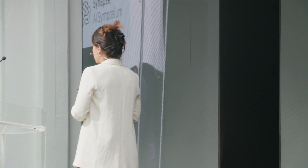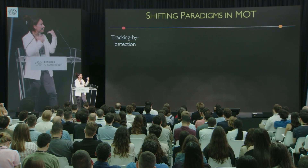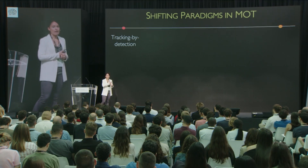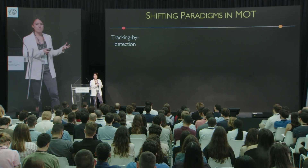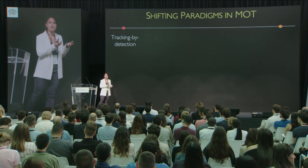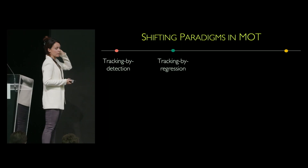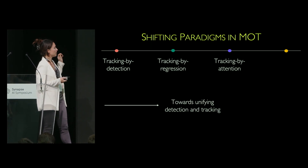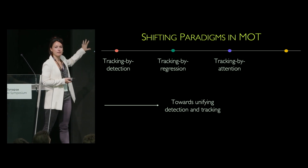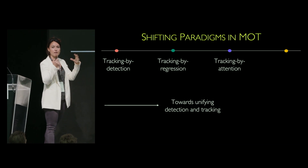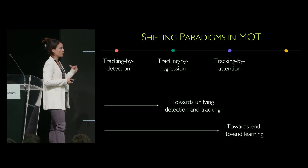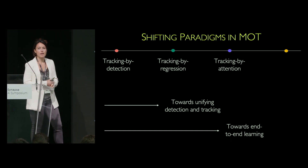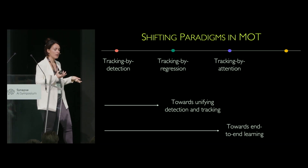Today I want to go through the different paradigms we've used in multi-object tracking from a scientific point of view and how they evolved: starting with tracking by detection, which is the classic paradigm, moving on to more modern tracking by regression and tracking by attention paradigms. In this talk, we're going to move from completely separate detection and tracking towards unifying both tasks and towards end-to-end learning, using more and more AI as we go forward.